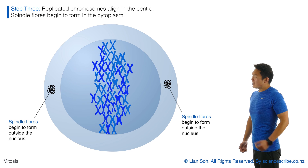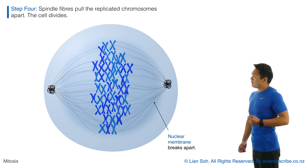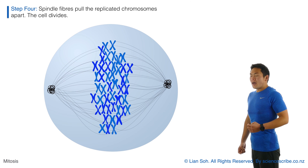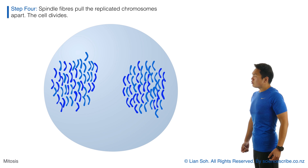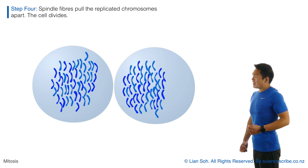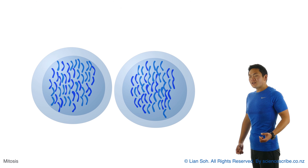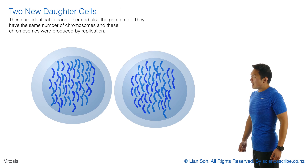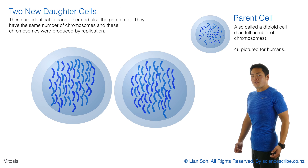As the chromosomes move towards the center, spindle fibers form outside of the nucleus. Once those chromosomes have all aligned, the spindle fibers come along and pull those chromosomes apart into two new daughter cells. Those two new daughter cells are identical to each other and to the original parent cell, and they all have the full number of chromosomes.